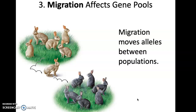Genetic drift can also happen through migration. If you have a population of brown rabbits and a population of black rabbits, each with their own allele frequencies, and one individual migrates from one group to another, you've just introduced possibly some different alleles into that population.